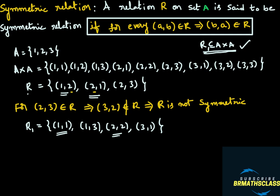Ordered pairs like (1,1) and (2,2) always satisfy the symmetric condition — no need to check. If you take ordered pair (1,3) in R1, is ordered pair (3,1) there in this relation? Yes, it is there. If you take ordered pair (3,1), is ordered pair (1,3) there in R1? Yes, it is there. So for every ordered pair in R1, there exists the reverse ordered pair (B, A) in this relation.